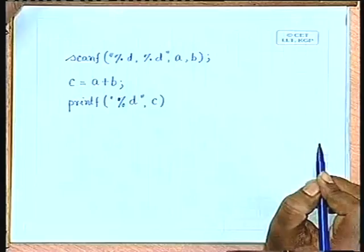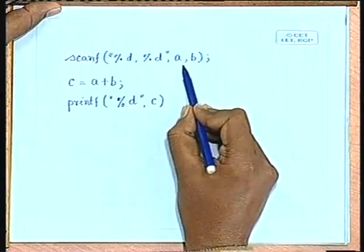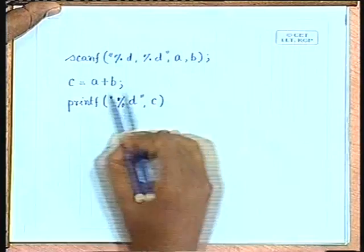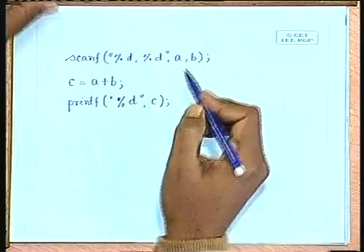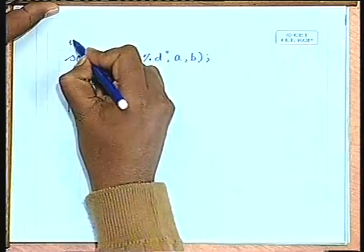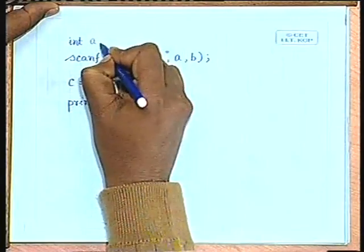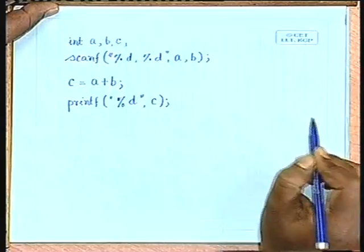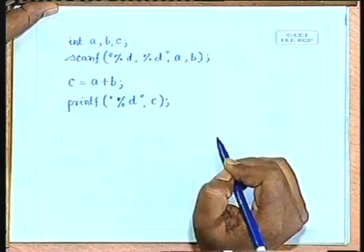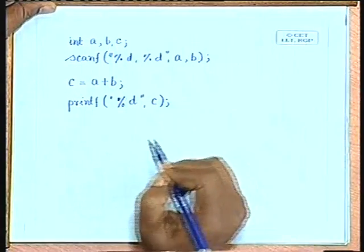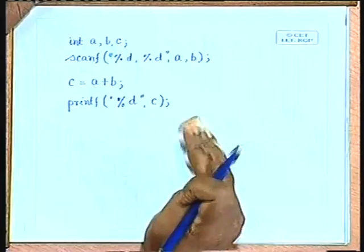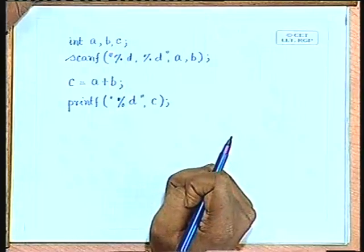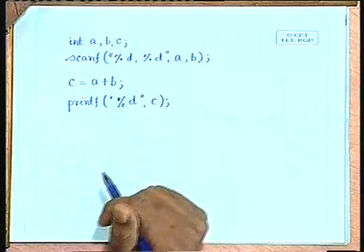Let us have a very simple program: scanf where the values of the variables a and b will be read in, then we perform the addition of these two variables a and b and the result is assigned to variable c, and then finally we would like to print the value of c. Before this we have to declare the variables a, b and c as integer variables. Let us try to see how this high level program will be executed by the computer. A computer is not capable of executing this high level language program directly, so we have to compile this program and create the executable code. To explain how the computer executes this high level program, let us convert it into an intermediate assembly level code.